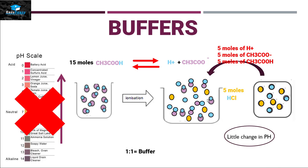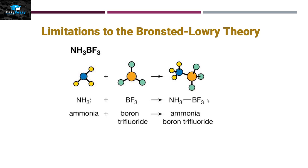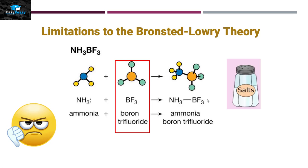This small change in pH can be determined by the Henderson-Hasselbalch equation. The Bronsted-Lowry theory explains buffers, pH, and the difference between strong and weak acids and bases — so why do we need a third theory? Because this theory also has limitations. Boron trifluoride can react with ammonia and make a salt, so it should fall under acid or base, but this cannot be explained by the Bronsted-Lowry definition. That's why we need the Lewis theory.